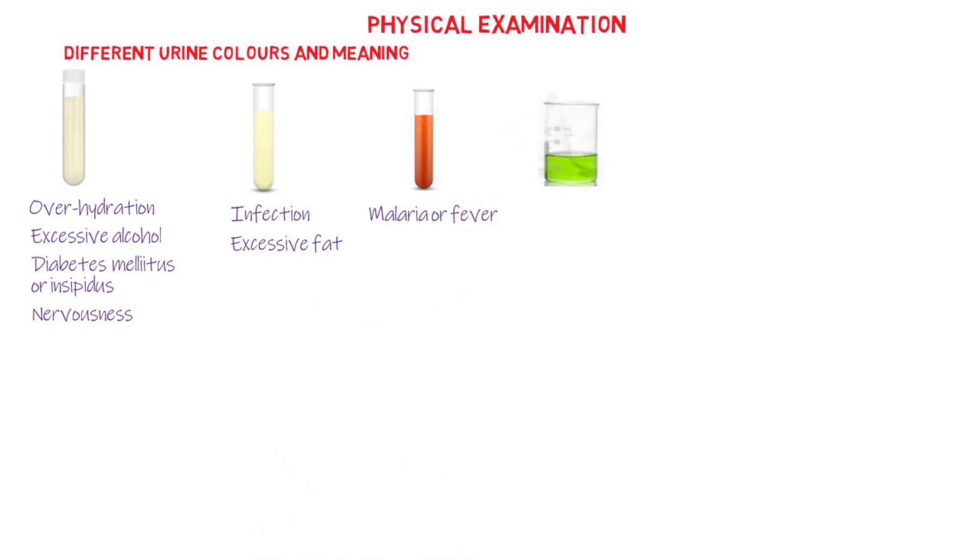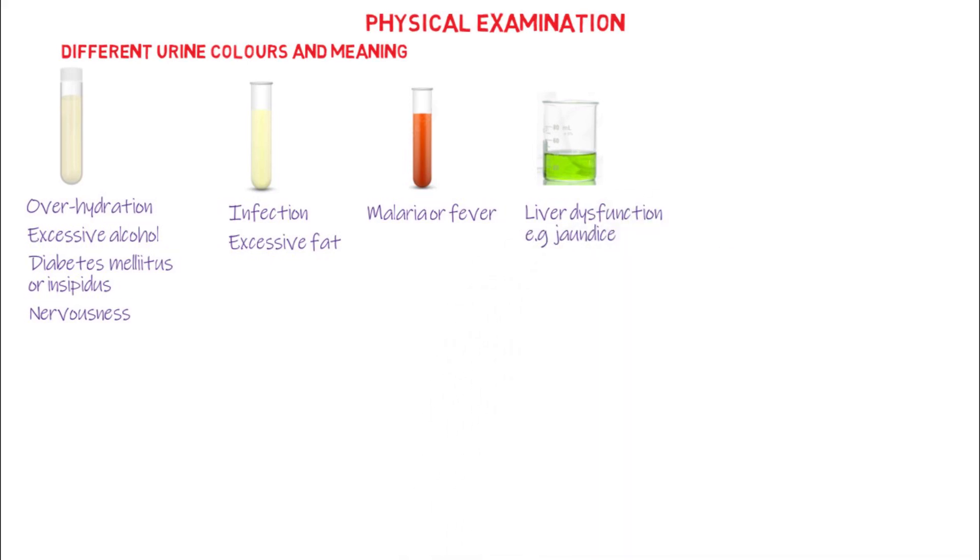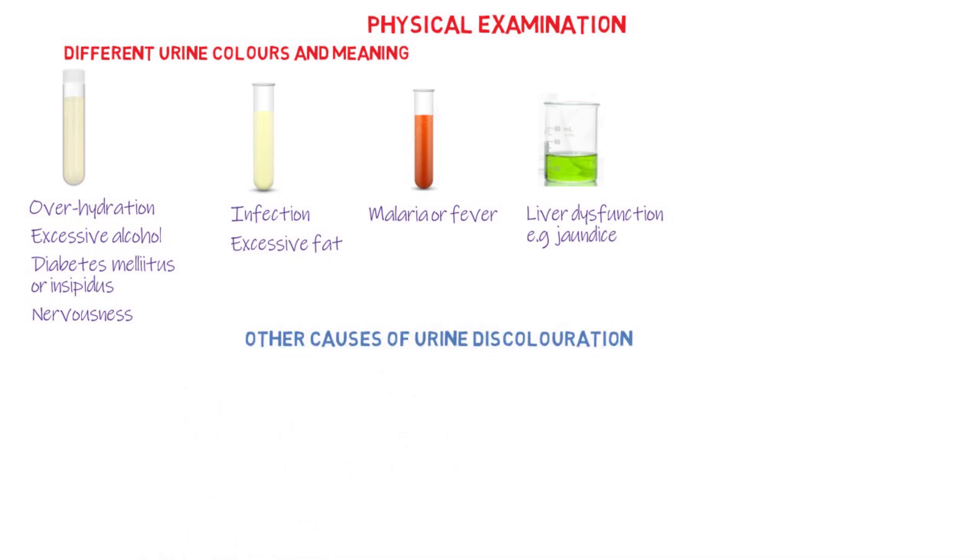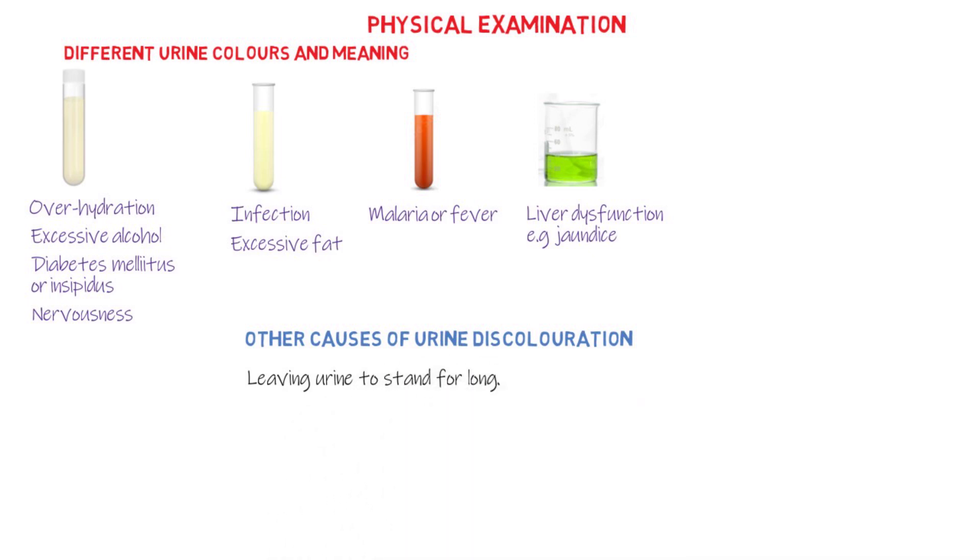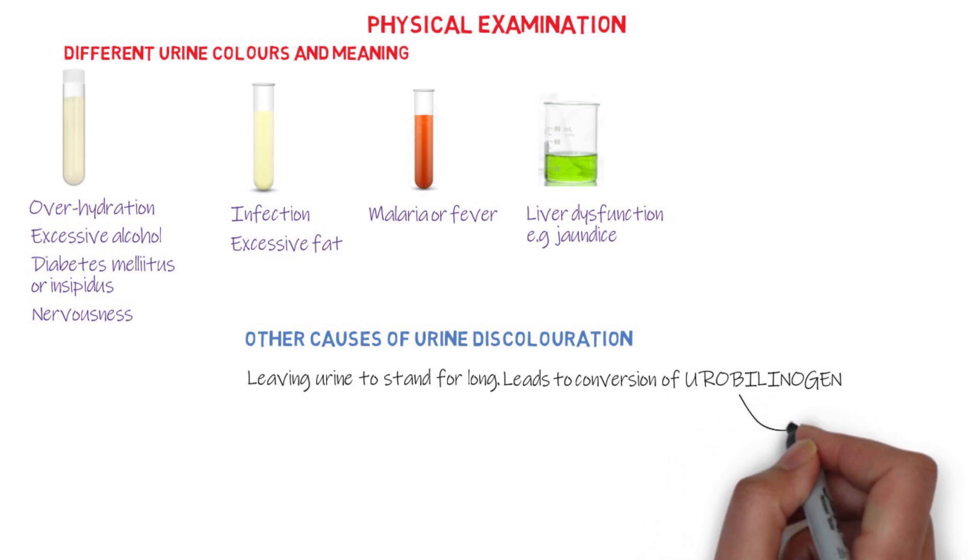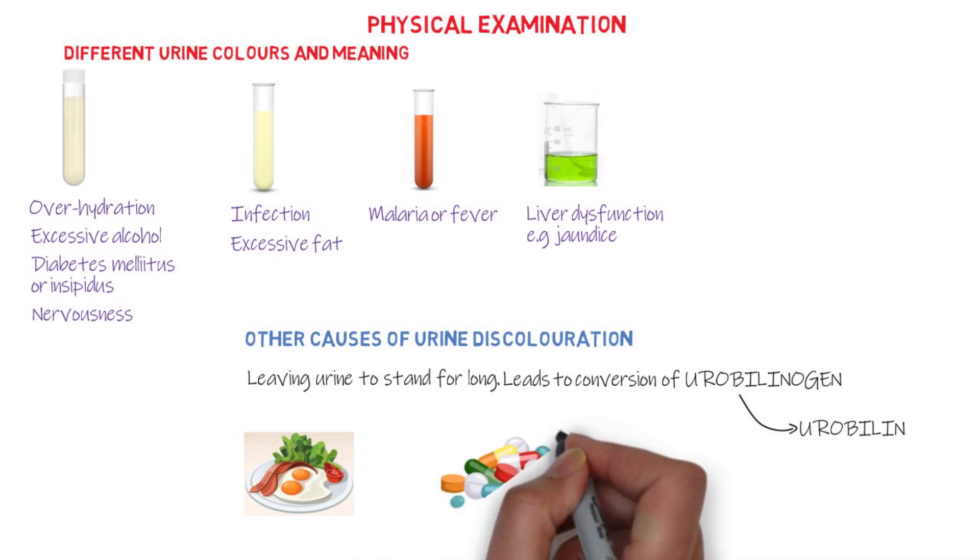A greenish urine suggests liver dysfunction like jaundice. We also have dark brown color and brownish black color. It is important to note that when you leave urine to stand for a particular period of time, it could also cause darkening of the urine as a result of the conversion of urobilinogen to urobilin. Food and drugs are also contributing factors of urine discoloration.